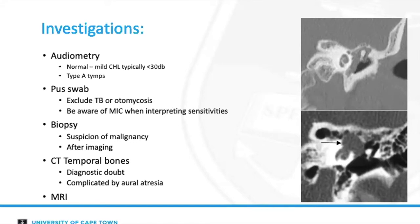As we know, antibiotic drops will achieve a minimum inhibitory concentration in the ear in excess of 100 times that achieved in the plasma when administered systemically.